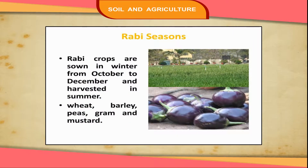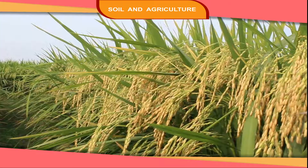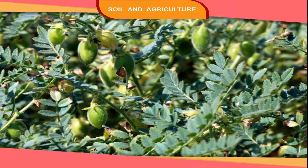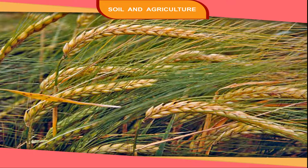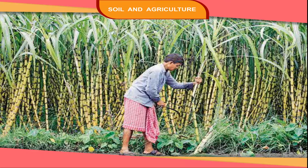The rabi season begins when monsoon ends and autumn starts. Crops grown in this season are called rabi crops. These crops are wheat, gram, barley, linseed and sugarcane.